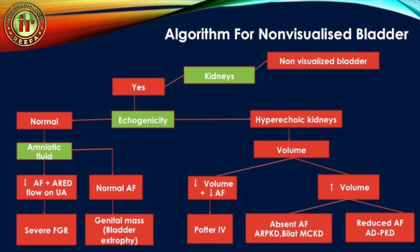With persistently non-visualized bladder but kidneys present, we look at the echogenicity of the kidneys. If the kidneys are hyperechoic and large in volume — large hyperechoic kidneys with absent or reduced amniotic fluid — it can be ARPKD, ADPKD, or bilateral multicystic kidney. If renal volume is reduced with decreased amniotic fluid, it is Potter type 4 — obstructive cystic renal dysplasia.